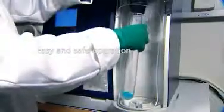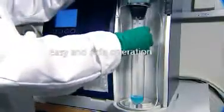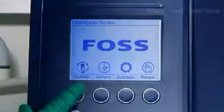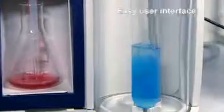Just load your sample tube, place the receiver solution flask, and close the door. Sensors for tube in place and the safety door ensure safe operation. Select the program and start the distillation.